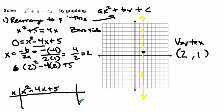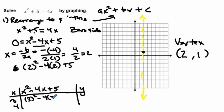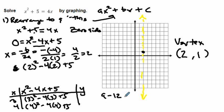If you want to practice substituting values, pause and try it yourself. My vertex x-coordinate is 2, so I'll pick the next two integer values to the right: 3 and 4. For x equals 3: 3 squared minus 4 times 3 plus 5 equals 9 minus 12 plus 5. The positives — 9 and 5 — make 14; 14 minus 12 is 2. So I have the point (3, 2).